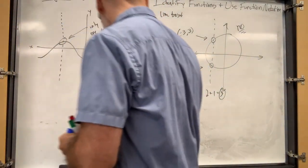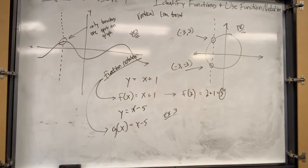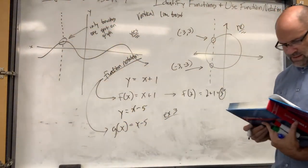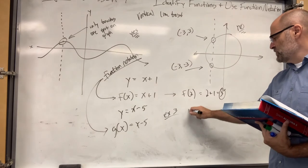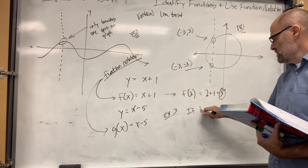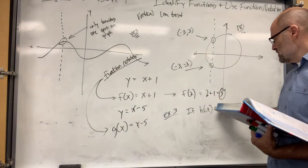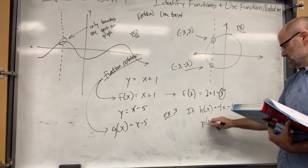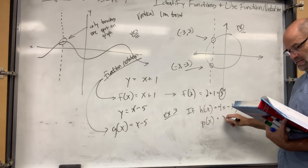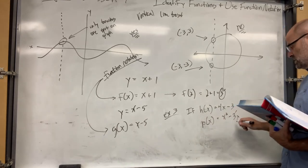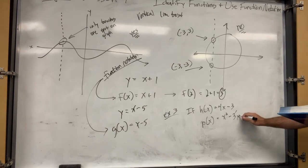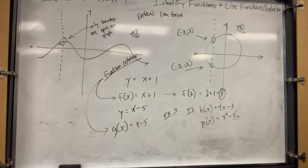Here's the last example - example three, function notation. They might give you two functions: h of x equals 4x minus 3, and p of x equals x squared minus 3x. These are two different functions. I want to find p of negative 3. The h of x is there to teach you which function to plug into.